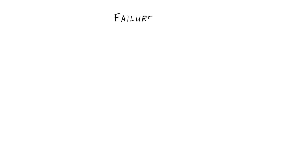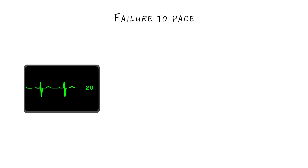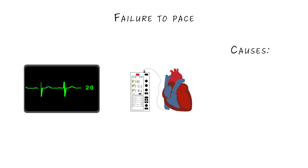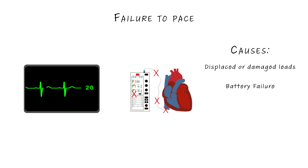Let's start with failure to pace. On the monitor, we won't see pacing spikes at all, and we will see the patient's underlying cardiac rhythm. This can be caused by displaced or damaged leads anywhere from the heart to the pulse generator, battery failure, or generator failure.